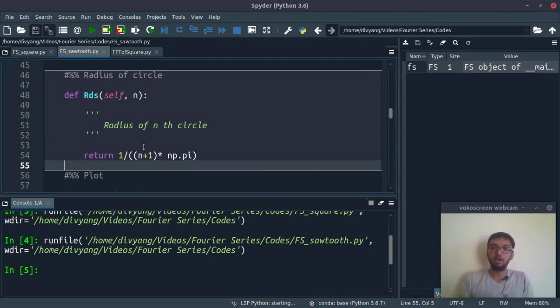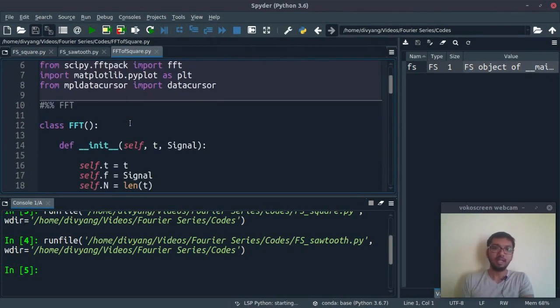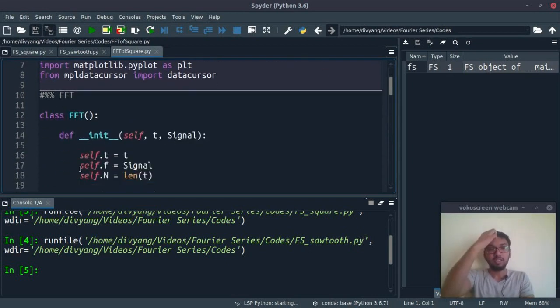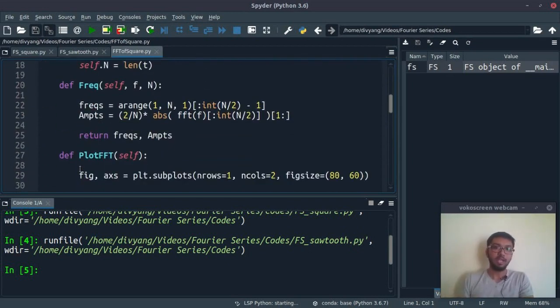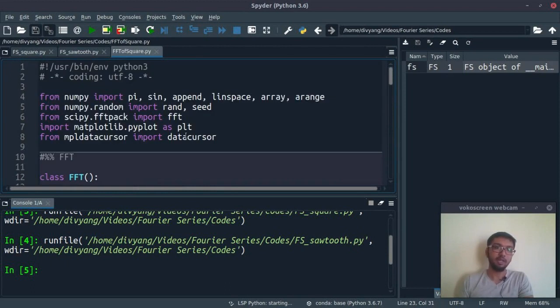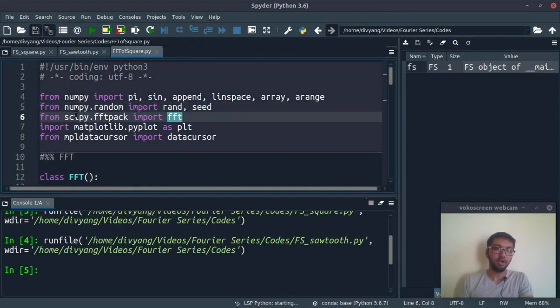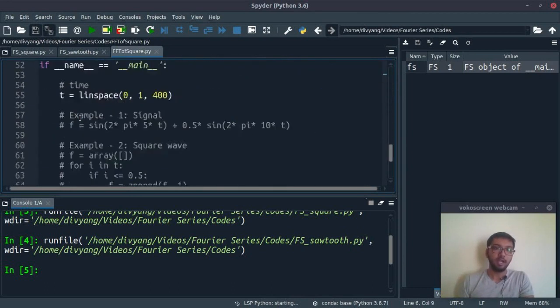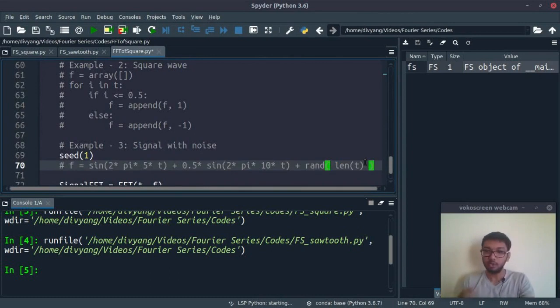People have developed a numerical version of the Fourier series so that they can visualize which type of frequencies are present in their signal. For that, scientists have developed an algorithm named Fast Fourier Transform, or FFT. This is the FFT code which I have written. I am using this FFT solver which is available in this scipy library.